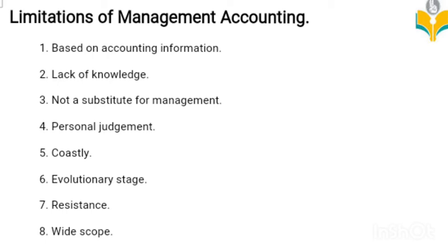Sixth: evolutionary stage. Management accounting is a new discipline still in the developing stage, and therefore faces all the obstacles and limitations of a new discipline. It is essential to secure cooperation and support of all workers for its successful functioning. Eighth: wide scope. Management accounting has very wide scope, including several subjects, which results in inaccuracy and other practical difficulties.